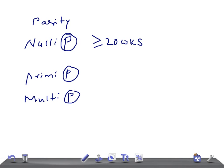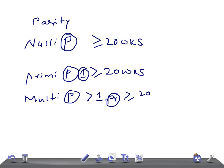Always remember: primi means one. Primipara means one pregnancy achieving more than or equal to 20 weeks. To remember parity, remember 20 weeks of gestation — that's really important. Multipara is a woman who has carried more than one pregnancy to 20 weeks or beyond, regardless of whether the baby survived or was a stillbirth.